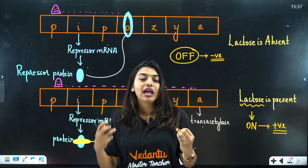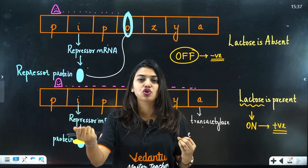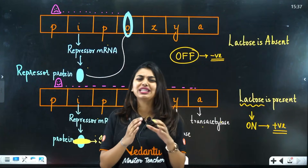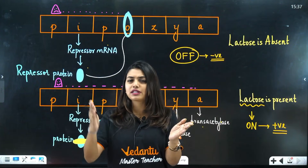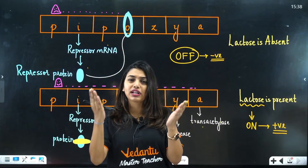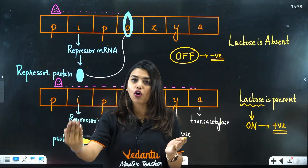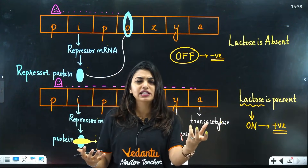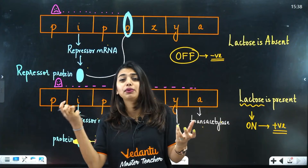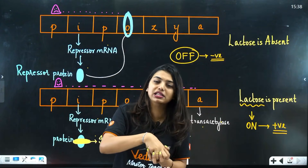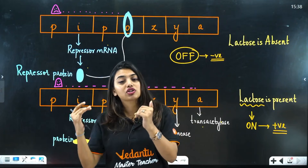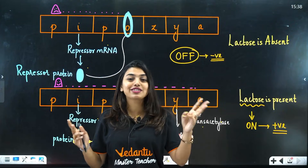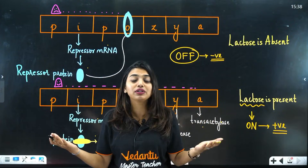So lac operon has two types of regulation: negative regulation when the switch is off, and positive regulation when the switch is on. When lactose is absent, the repressor protein binds the operator, switching the gene off. When lactose is present, the inducer binds the repressor so it cannot reach the operator, switching the gene on.